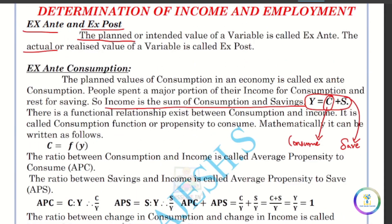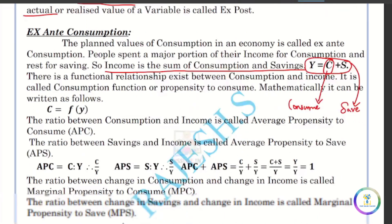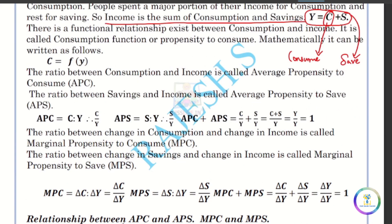So what is ex ante consumption? That is an important term: Marginal Propensity to Consume — MPC in small letters. That means the change in consumption divided by the change in income.